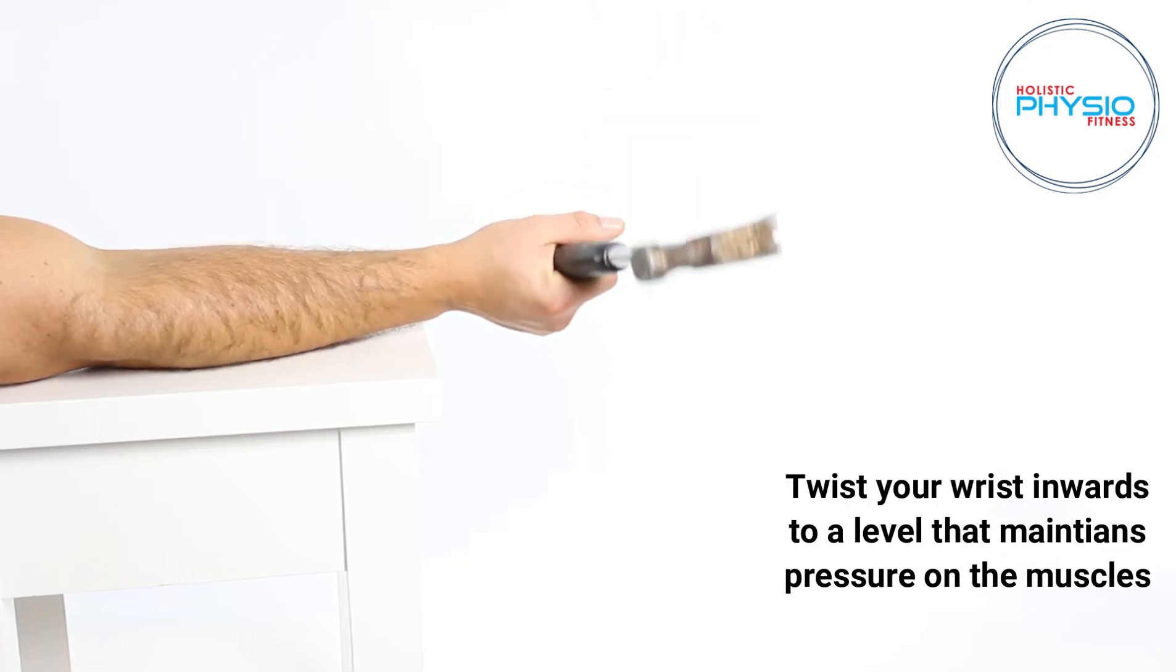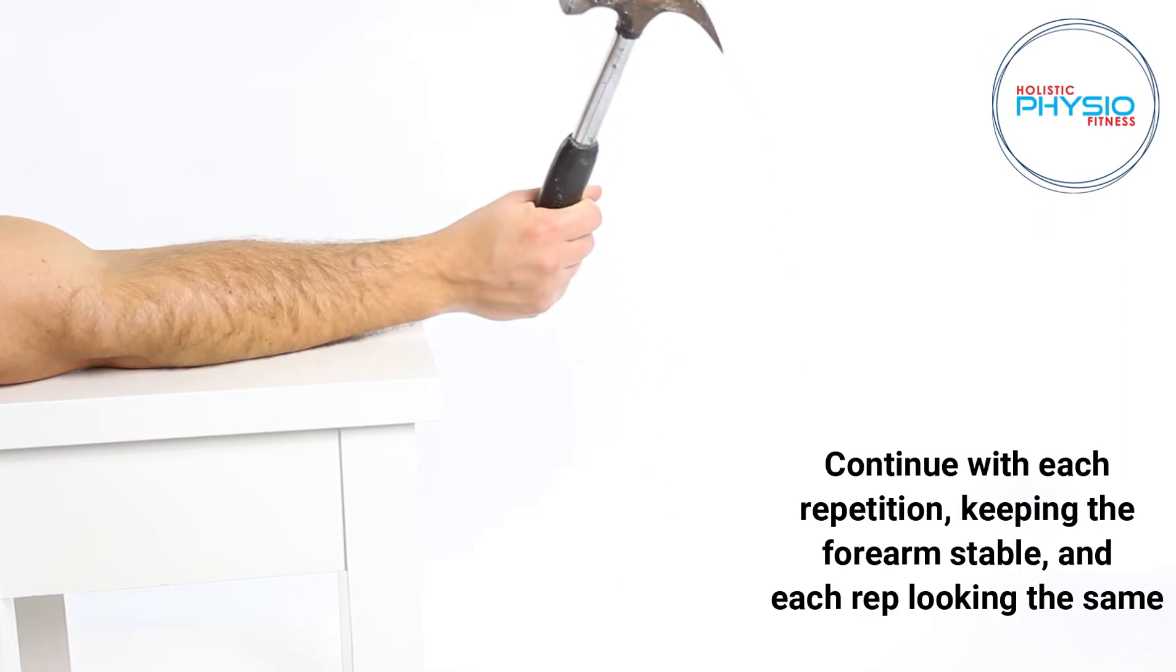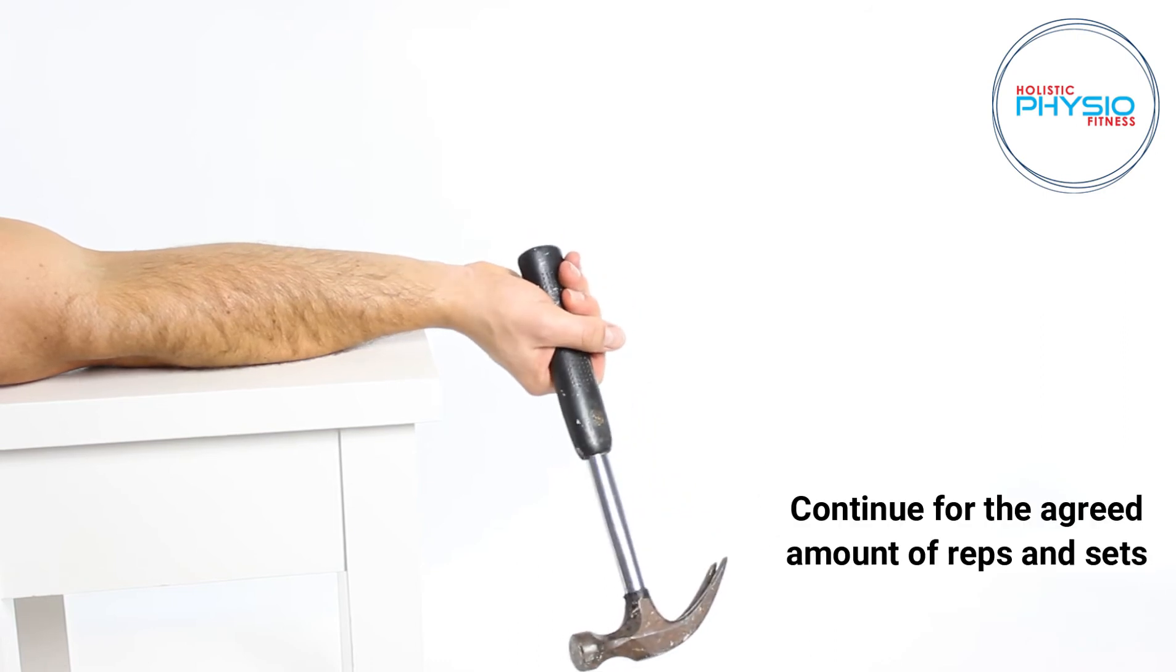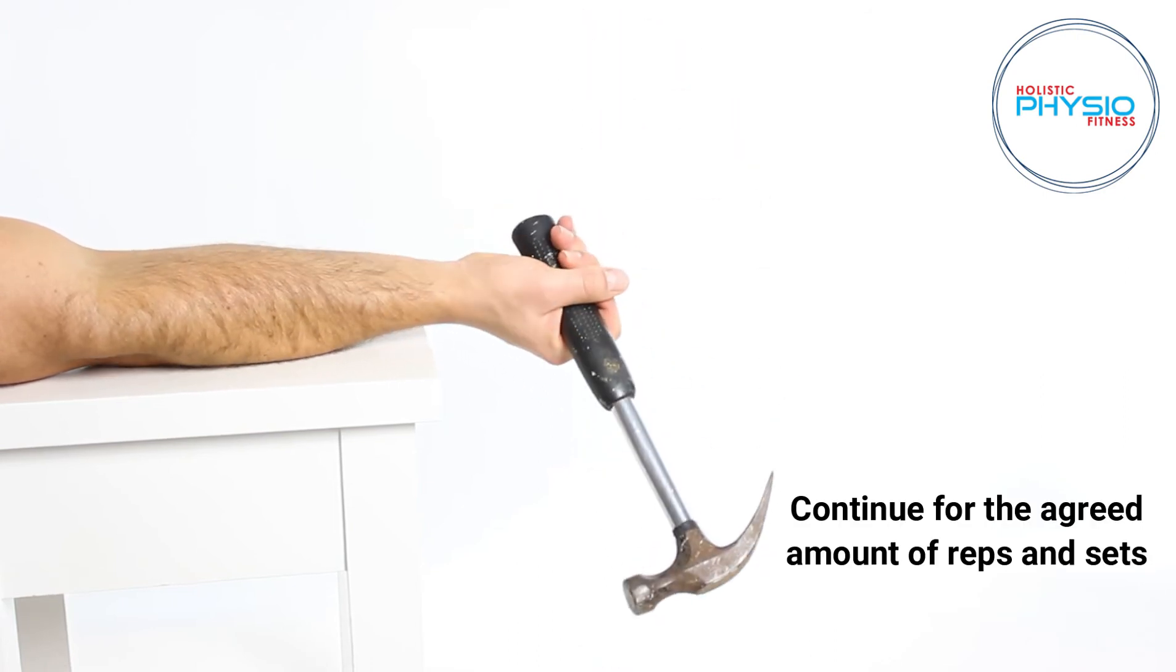Twist your wrist inwards to a level that maintains pressure on the muscles. Continue each repetition, keeping the forearm stable and each rep looking the same. Continue for the agreed amount of reps and sets.